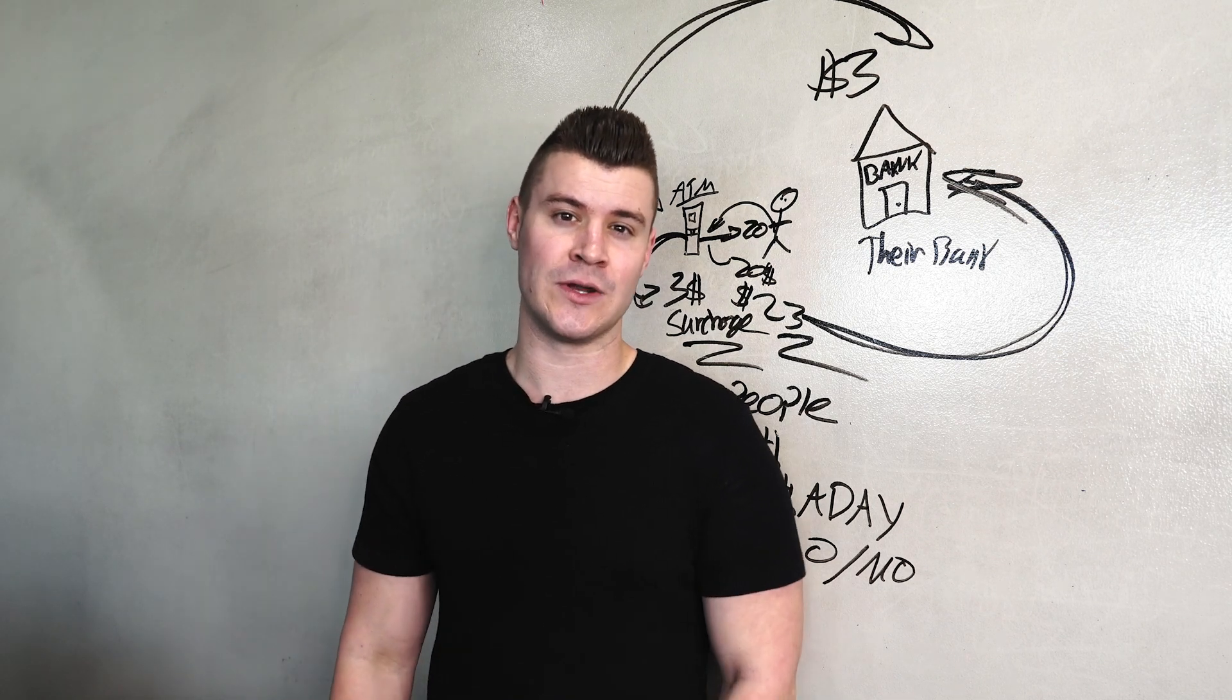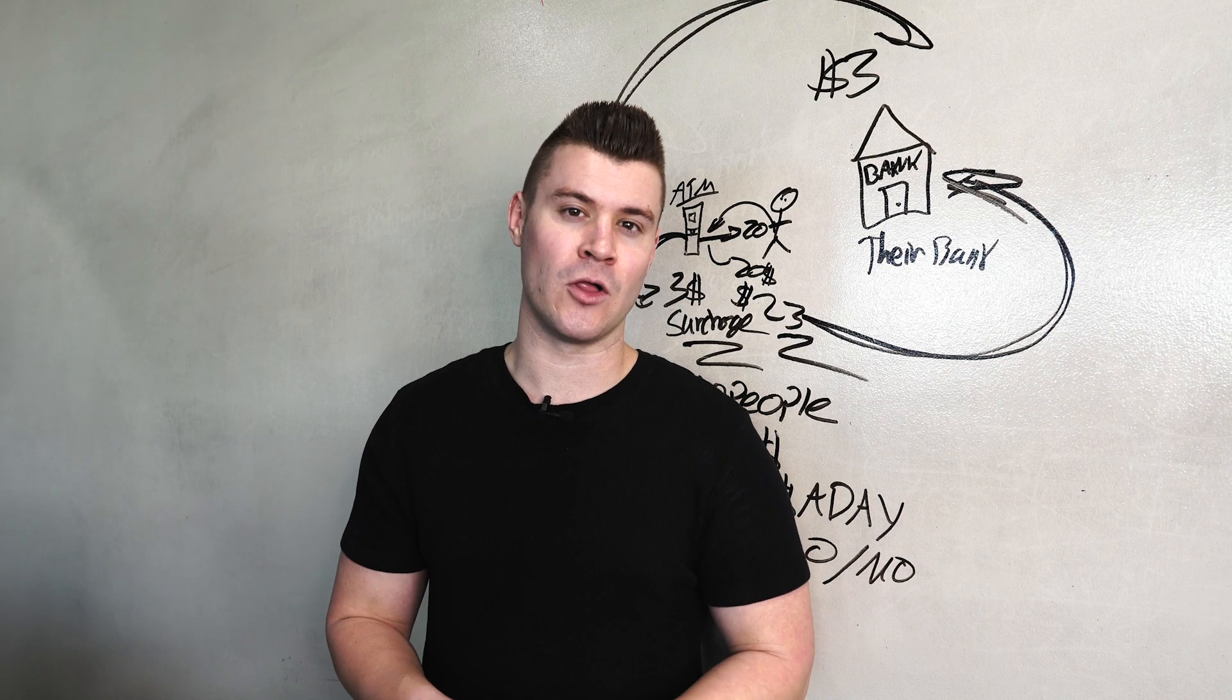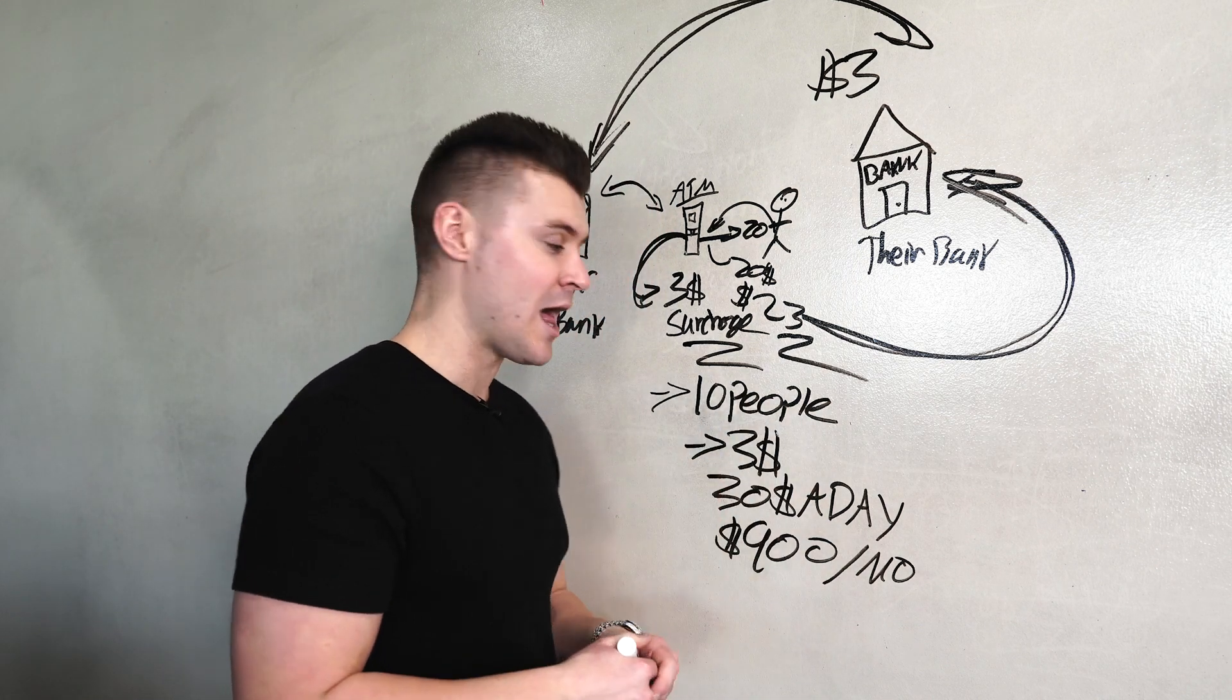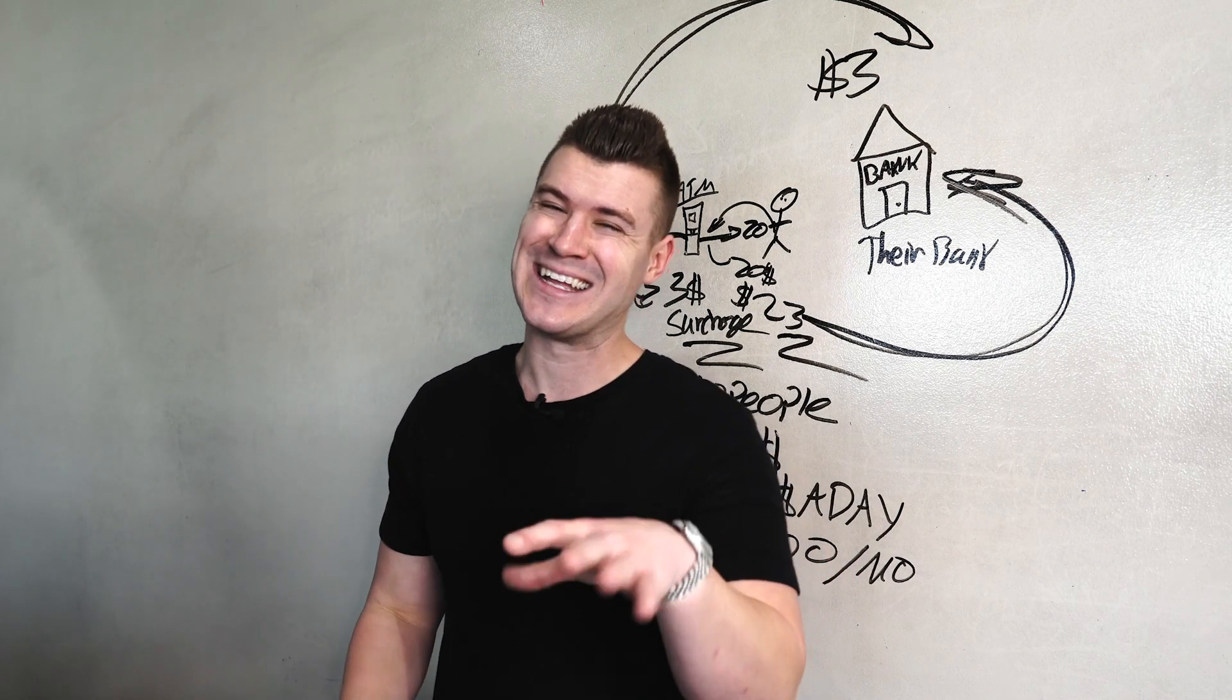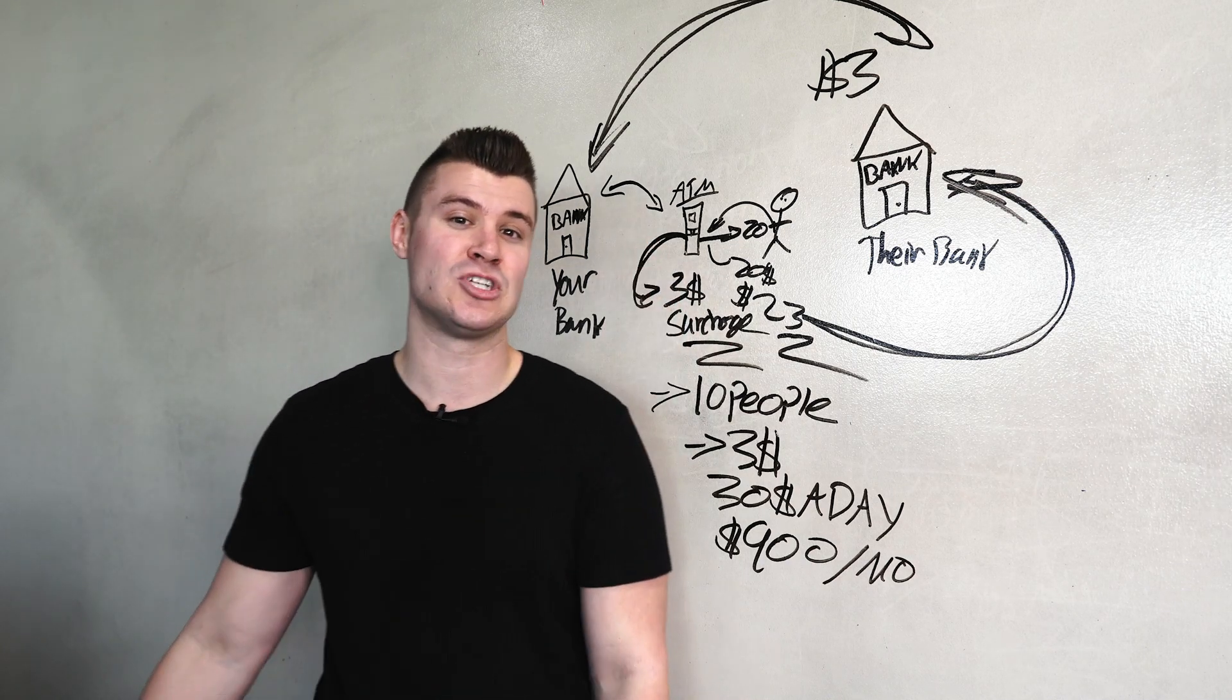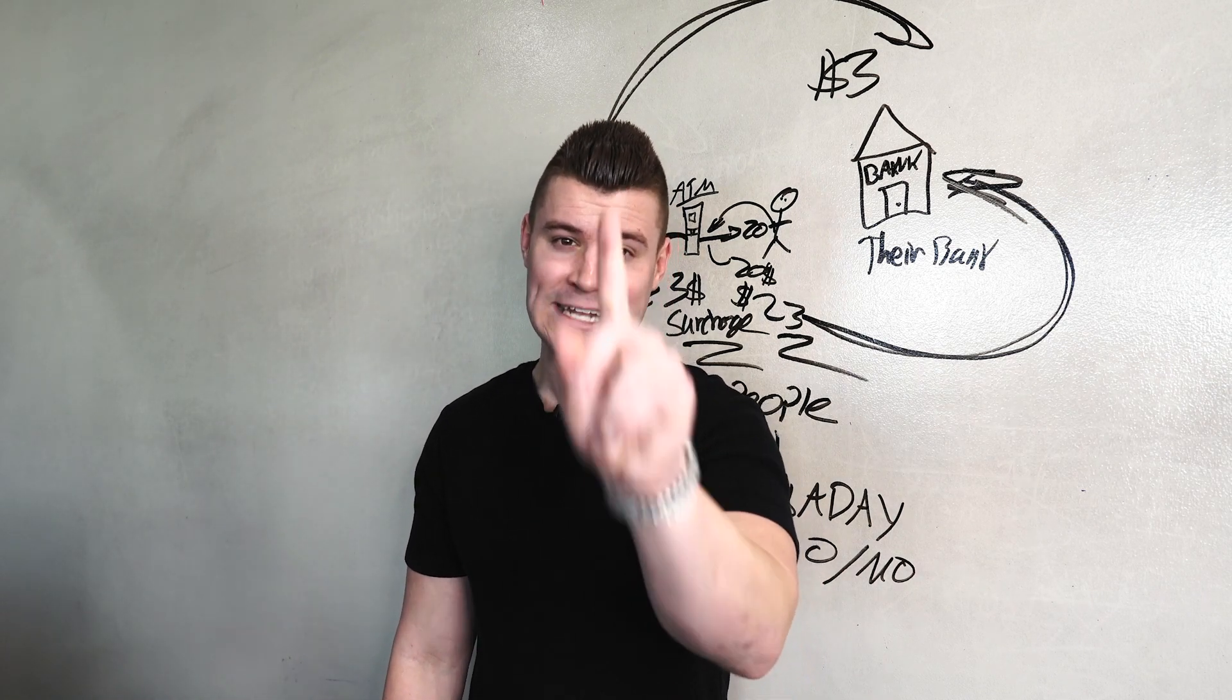Our average surcharge here in Arizona is around $3.50 a transaction. Now, for those of you that are all around the world, you guys need to do averages with surcharges as well. Our average is $3.50. I just took an average of $3. Let's just say 10 people use that. That's $30 a day. Again, $30 a day doesn't seem like a lot, but it's money that you're not doing anything for. You're just making money by owning the ATM machine and other people using that ATM machine. You then in turn make $900 a month off of one ATM machine.